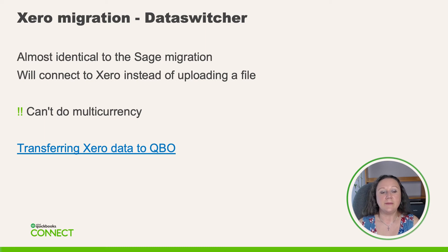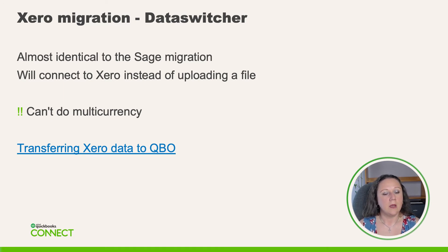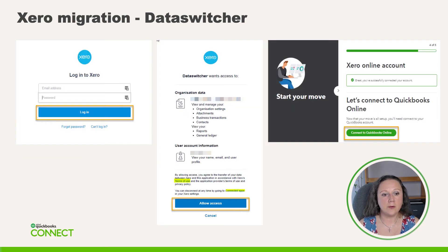Now our Xero migration also uses Data Switcher and is almost identical to the Sage migration. The only difference is that it's going to connect you to Xero instead of uploading that cab file. Another main difference is that our Xero migrations cannot do multi-currency because of the way that Xero calculates multi-currency. Here's another hyperlink with information on limitations for transferring Xero data to QBO. When you go to connect to your Xero, you will be asked to log into Xero from Data Switcher — just entering your Xero login credentials, clicking the login button, and then confirming that it's okay to give Data Switcher access to that Xero account.